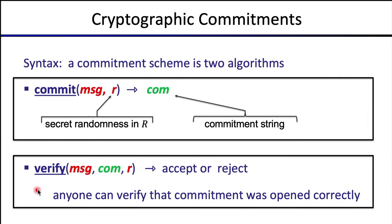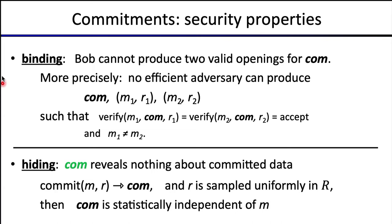There are two important security properties for commitment schemes. The first is the binding property: once Bob sends a commitment, he cannot change his mind about the data inside. More precisely, he cannot find a single commitment string that can be opened in two different ways — M1,R1 and M2,R2 — where M1 ≠ M2. The second property is hiding: the commitment reveals nothing about the committed data. The commitment string should be statistically independent of M, sometimes called an unconditionally hiding commitment.